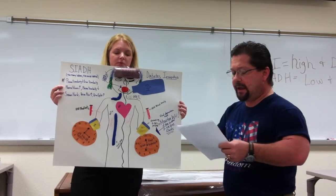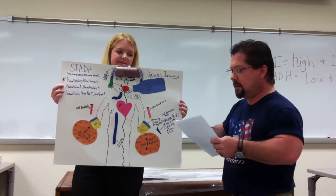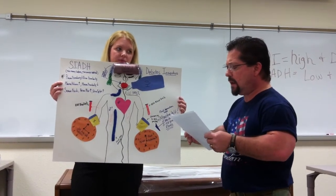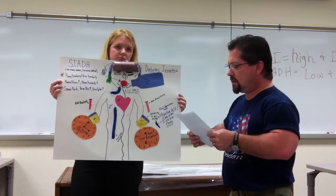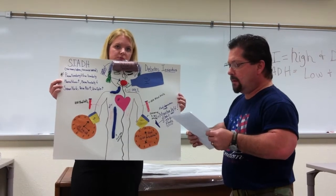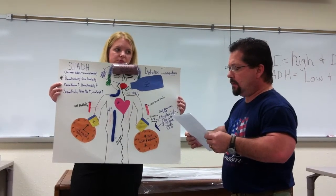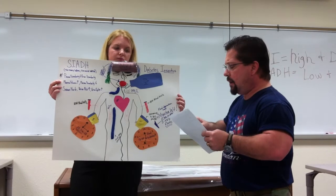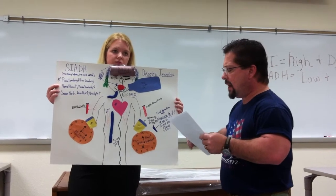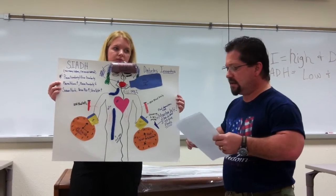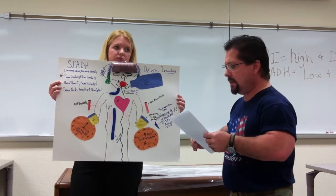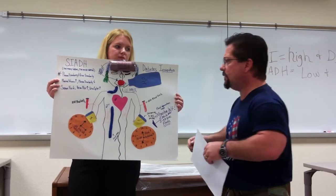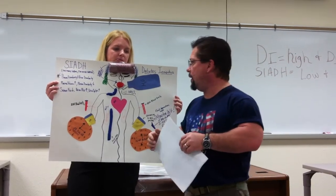Those with SIADH typically have decreased blood sodium osmolality but a normal urine sodium, and they do not produce as much urine as expected. Urine osmolality is high relative to the serum osmolality, and the ADH concentration is in excess of what would be appropriate.